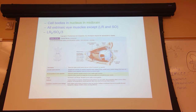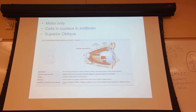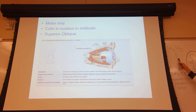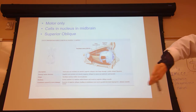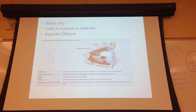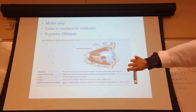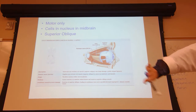Cranial nerve IV is motor only. It targets the superior oblique muscle, which causes your eyeball to move down and out — depression and abduction. Remember: LR6, SO4, everything else is 3.